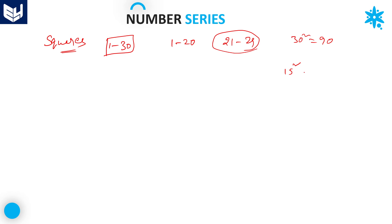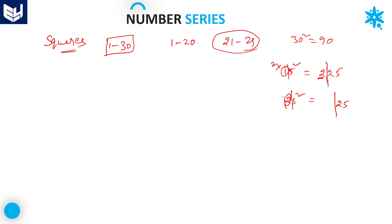Let us take 15 squared. We know that 15 squared is 225. The shortcut is: whenever any number ends with 5, the last two digits must be 25 — because 5 squared is 25. Then take the tens digit, which is 1, and multiply it by the next number: 1 × 2 = 2. Write that in front, giving 225. For 25 squared: last two digits are 25, and 2 × 3 = 6, so 25 squared is 625.